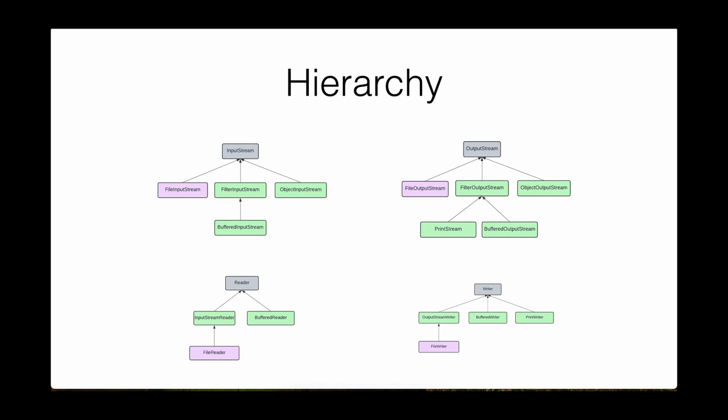There are four different hierarchies with four abstract parent classes: InputStream, OutputStream, Reader, and Writer. The hierarchy matters for wrapping — in most cases, when you wrap one class with another, they must be from the same hierarchy. There are some exceptions, but to remember which classes can be wrapped together, just remember they almost always have to be from the same hierarchy. If you try to mix and match between two different hierarchies, the wrapping will not work.